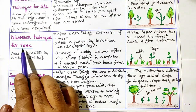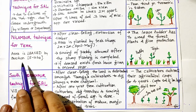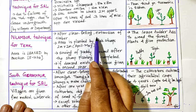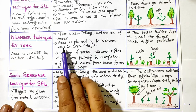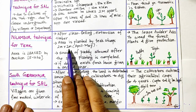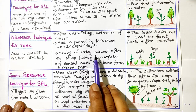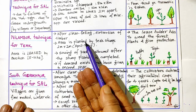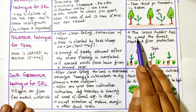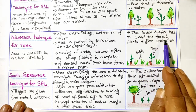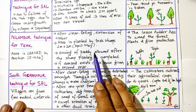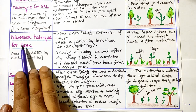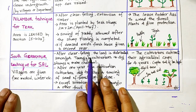The Nilambur technique for teak is an example of leased taungya. The area is leased or auctioned in lots of five to ten hectares. After clear felling and timber extraction, teak stumps are planted at 2m × 2m spacing in April–May. Sowing of paddy is allowed after stump planting. If demand exists, a fresh lease is given in the second year. The leaseholder must weed the forest plants and provide protection — so the department gets money and weeds are suppressed simultaneously.